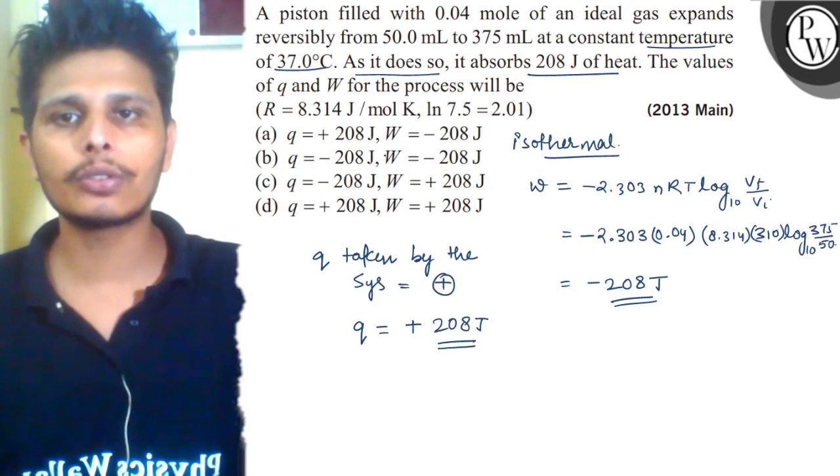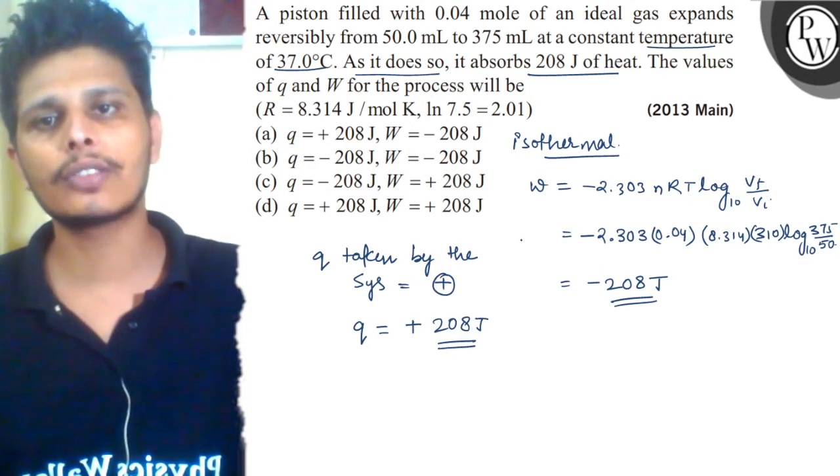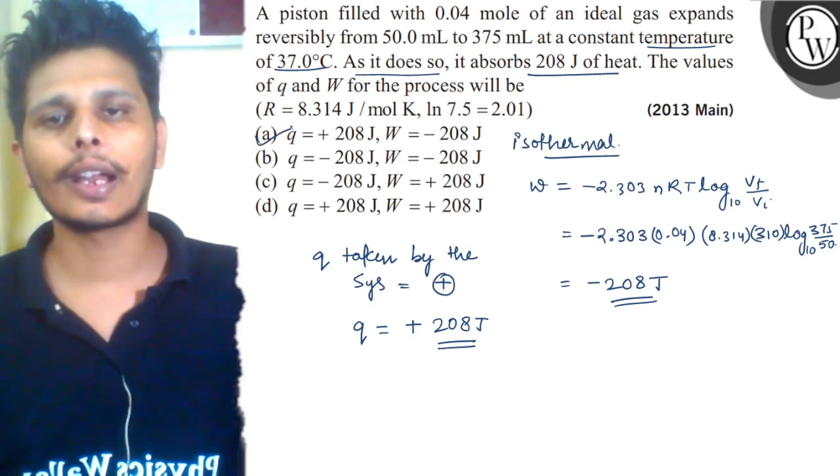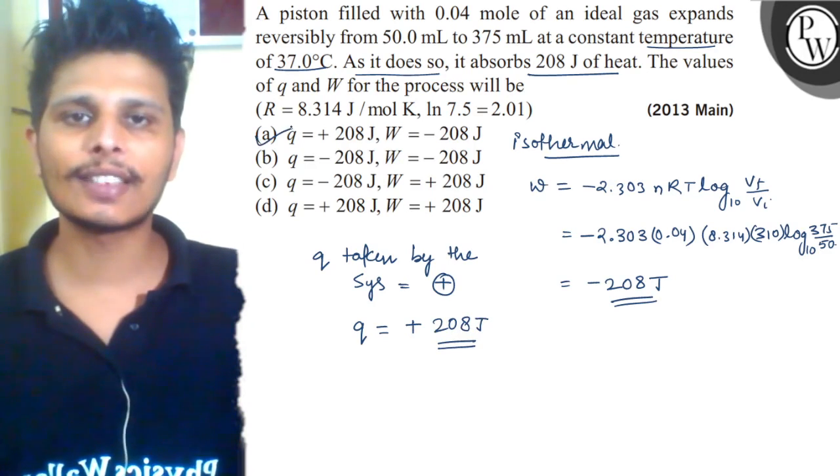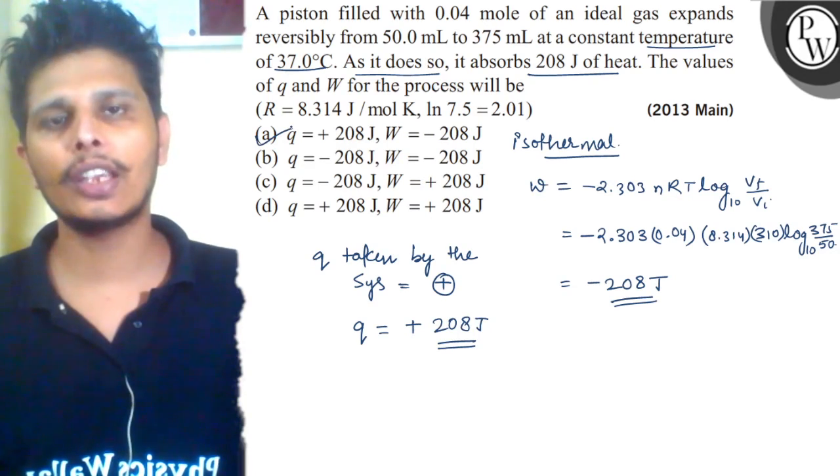So Q value will be plus 208 and W value will be minus 208. Hence option a will be the correct answer. I hope the concept is very much clear to you. Thank you and best of luck.